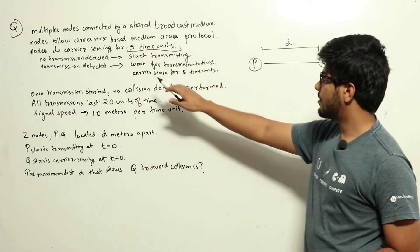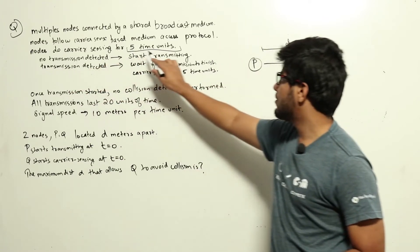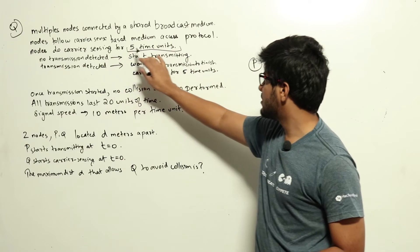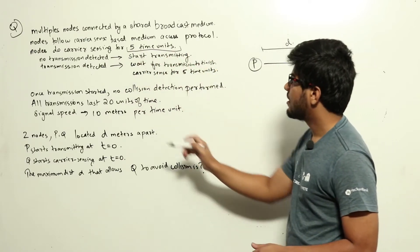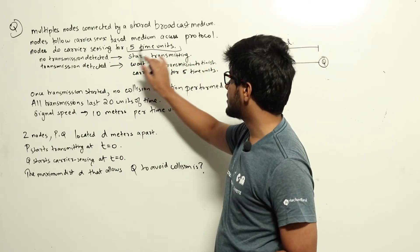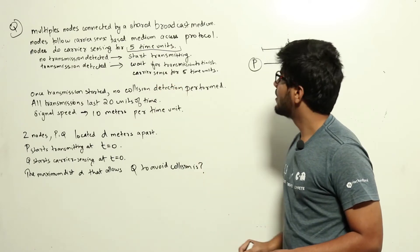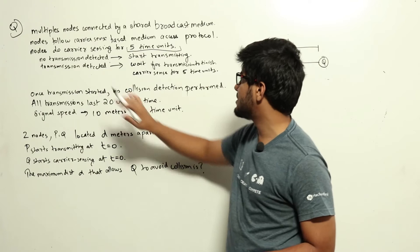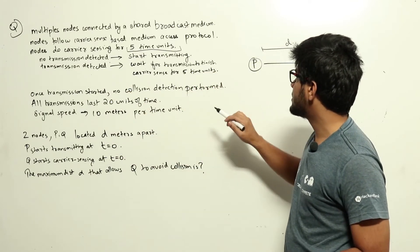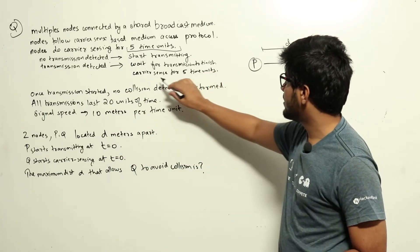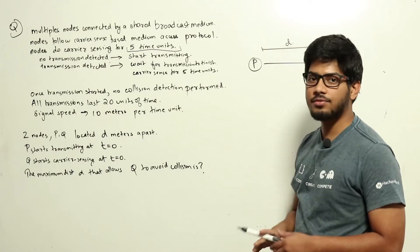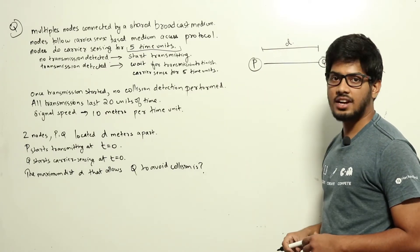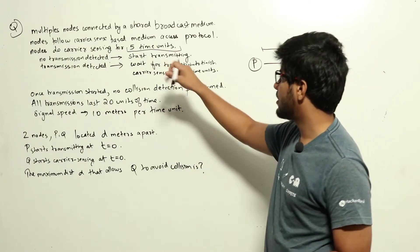When a node has a packet to transmit, it does carrier sensing for five time units. If no transmissions are detected in those five time units, it starts transmitting. If a transmission is detected, it waits for that transmission to finish, then does carrier sensing for five time units again, and if no collision is detected, that node starts transmitting.